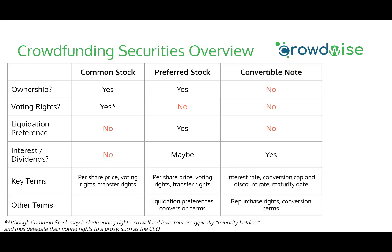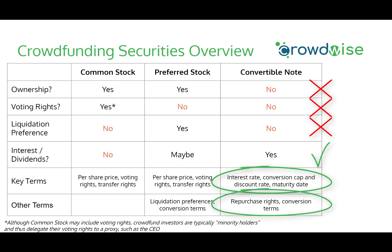Next, we move on to convertible notes. A convertible note is not actual equity ownership in the company — so don't expect voting rights, and they don't usually come with liquidation preferences. However, convertible notes do include an interest payment with a maturity date. Key deal terms for convertible notes include the interest rate, the conversion cap and discount rate, and a maturity date upon which repayment is due. Other terms to look for are repurchase rights and conversion terms.